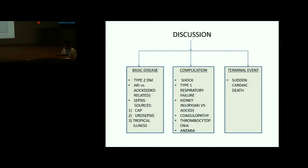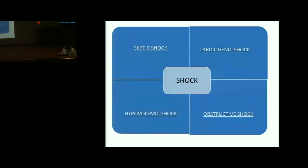Regarding shock, given the presence of fever, cough, possible sources of infection in the form of urosepsis and community-acquired pneumonia, and ongoing organ dysfunction, septic shock was considered the primary cause. However, cardiogenic shock could not be ruled out given his history of diabetes, alcohol abuse, and intermittent pedal edema for 2-3 years.